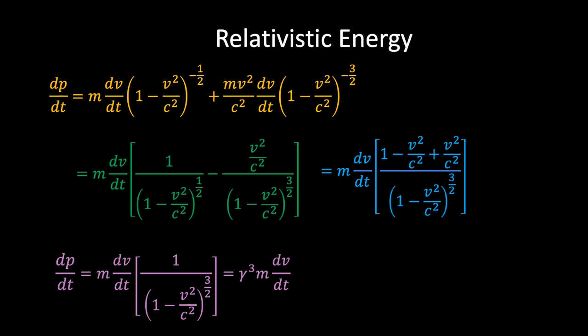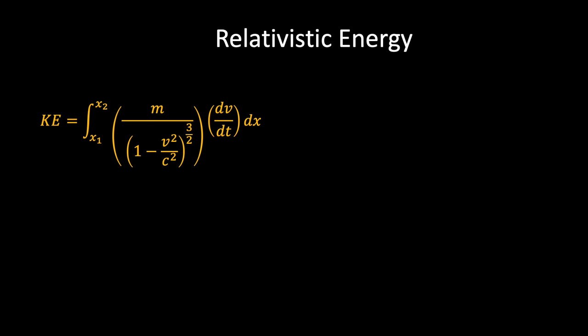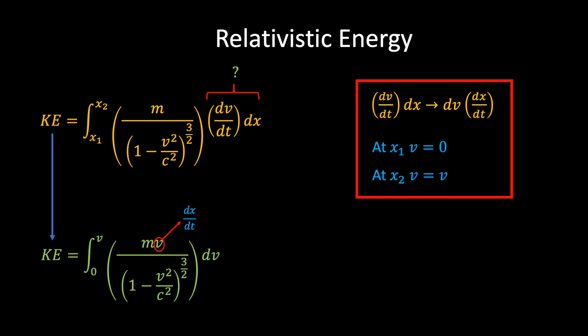Now that we have a concise expression for the derivative of the momentum, we substitute this back into our integral to determine the kinetic energy. The trick to solving this integral is to change variables so that we integrate with respect to v rather than x, rewriting (dv/dt)dx as (dx/dt)dv. This also changes the limits: the object begins at rest so v=0 at x₁, and velocity equals v at x₂. Substituting back gives a relatively simple integral; integrating with respect to v and substituting in the limits, we finally arrive at the expression for kinetic energy.